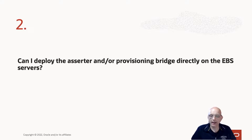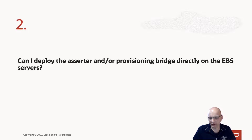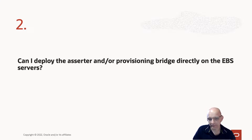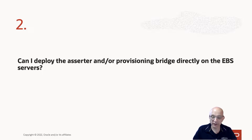The second question I get asked is: if I am deploying the Assertor and/or the Provisioning Bridge, can I put them directly on the EBS servers, because I don't necessarily want to spin up additional infrastructure? The answer is technically yes, there's nothing to stop you installing additional components on your EBS servers. However, my recommendation would be not to do that. My recommendation would be to leave the EBS servers alone and deploy the Assertor and the Provisioning Bridge onto separate servers. It means you're minimizing the dependencies and any conflicts between them.